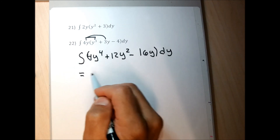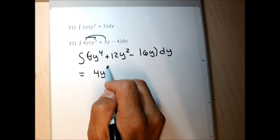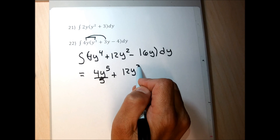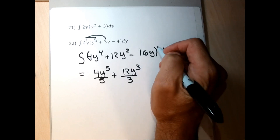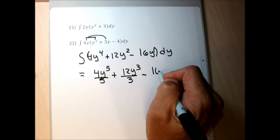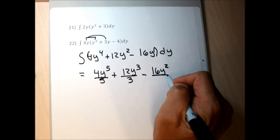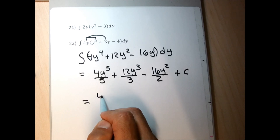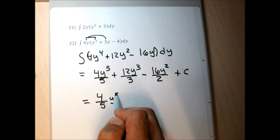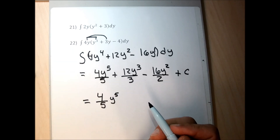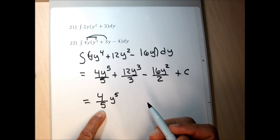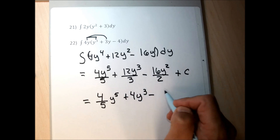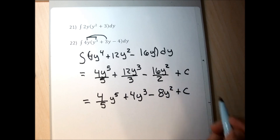Now I drop the integral symbol and add 1 to each exponent. 4 plus 1 is 5, divide by 5; 2 plus 1 is 3, divide by 3; bring the minus sign down, the exponent was 1, add 1 to get 2, divide by 2; tack on plus C. Simplifying: 4/5 y to the fifth, plus 4y cubed, minus 8y squared, plus C. That's the answer for problem 22.